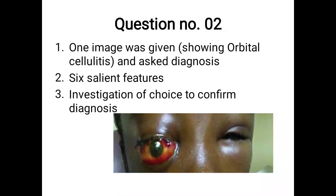The next question had an image given — memory-based, correlating with the DNB examination pattern. The image was suggestive of orbital cellulitis; the diagnosis is orbital cellulitis. The salient features to write include: ophthalmoplegia, pain with eye movement, proptosis, toxic look, visual disturbances, absent or diminished pupillary reflex, conjunctival hyperemia, chemosis, raised intraocular pressure, and loss of extraocular movement.